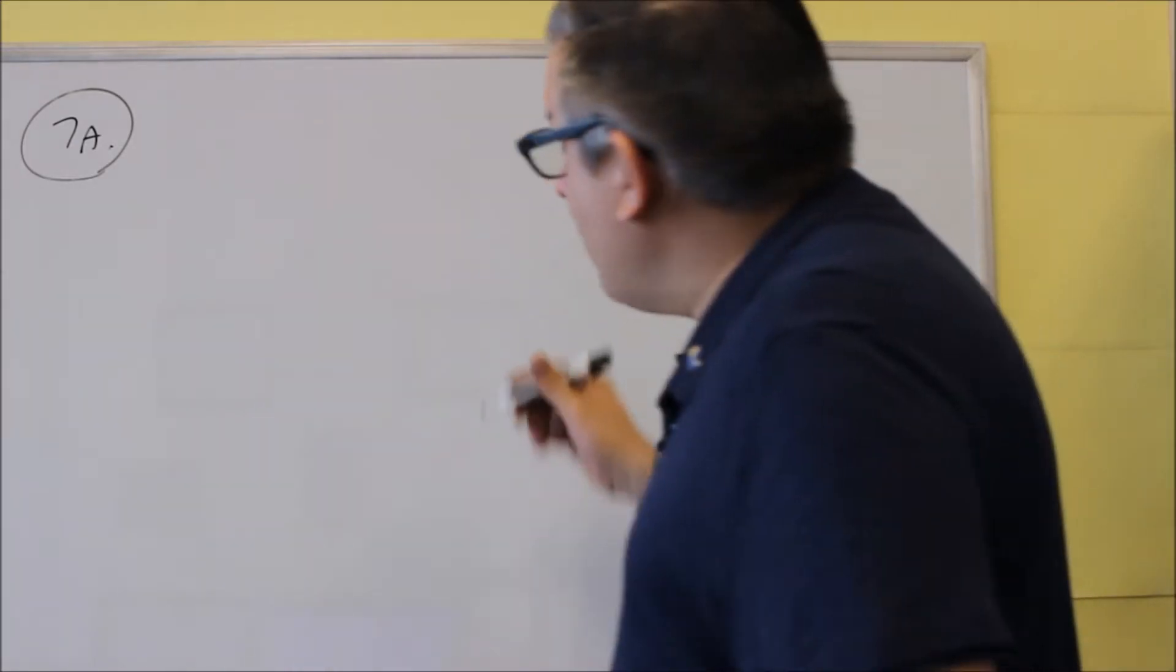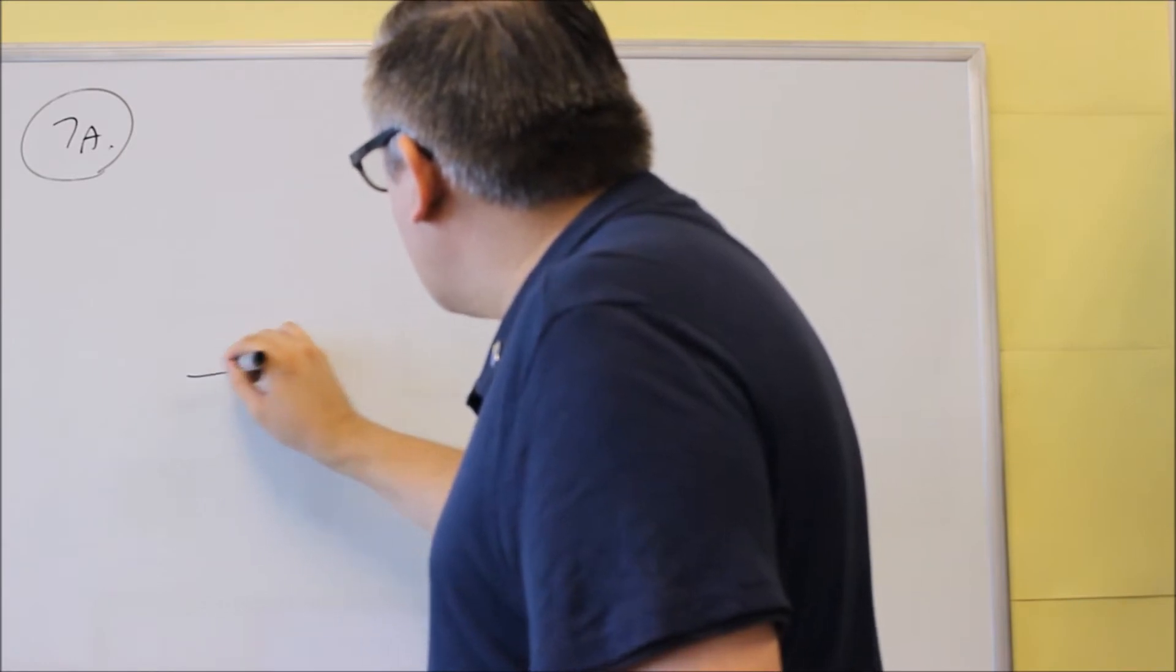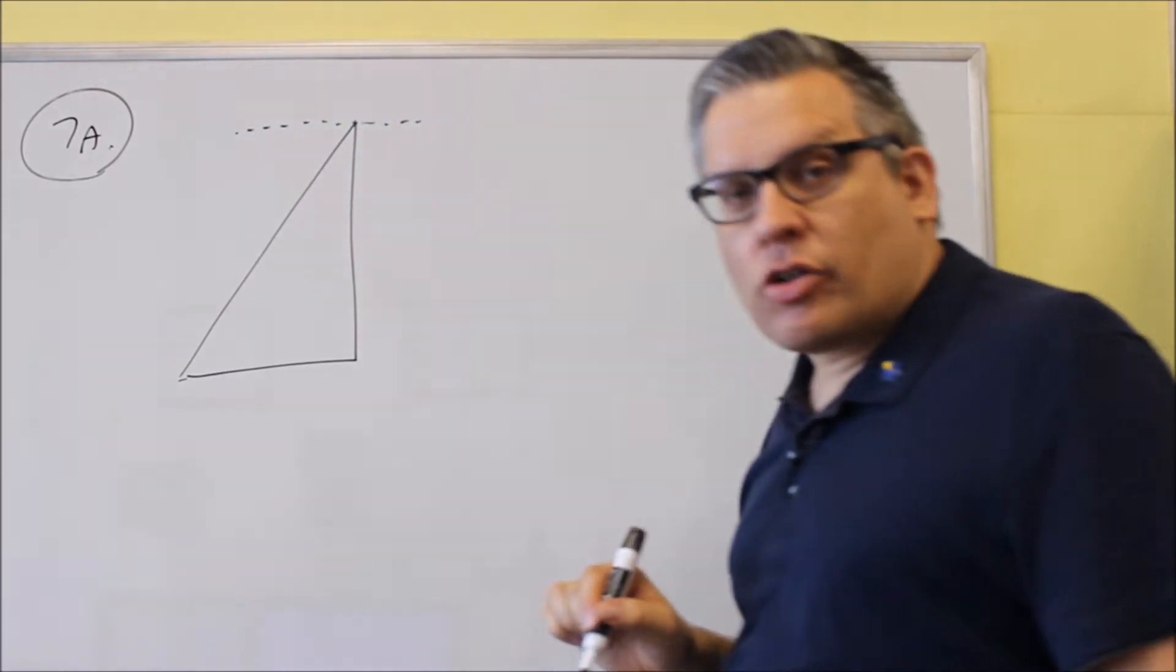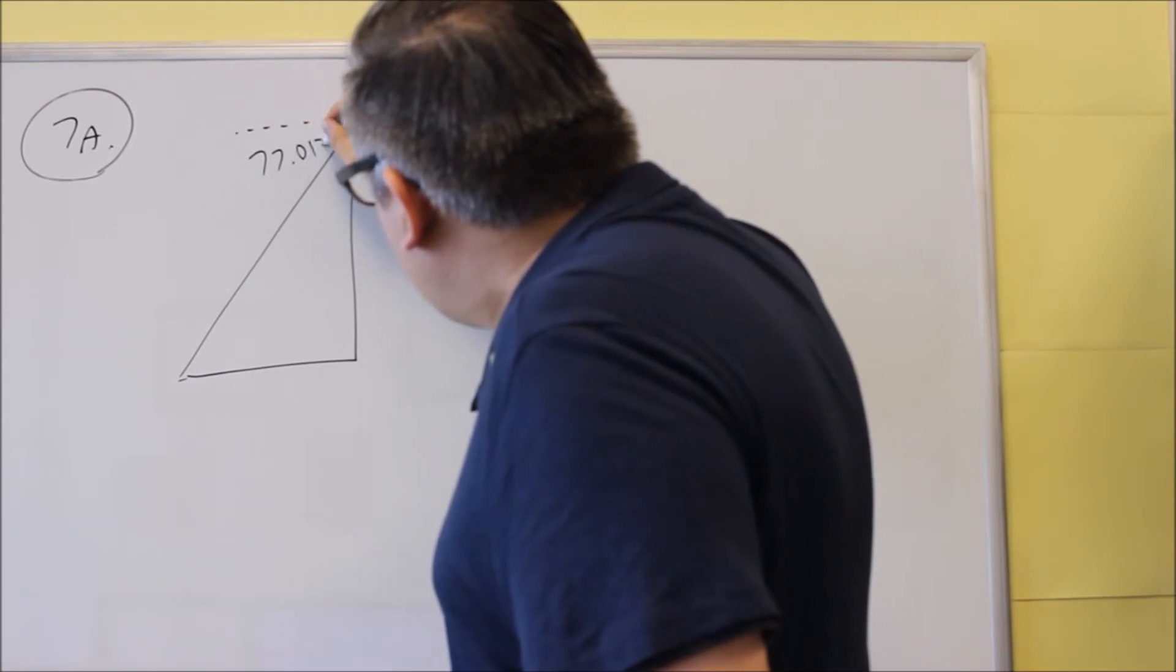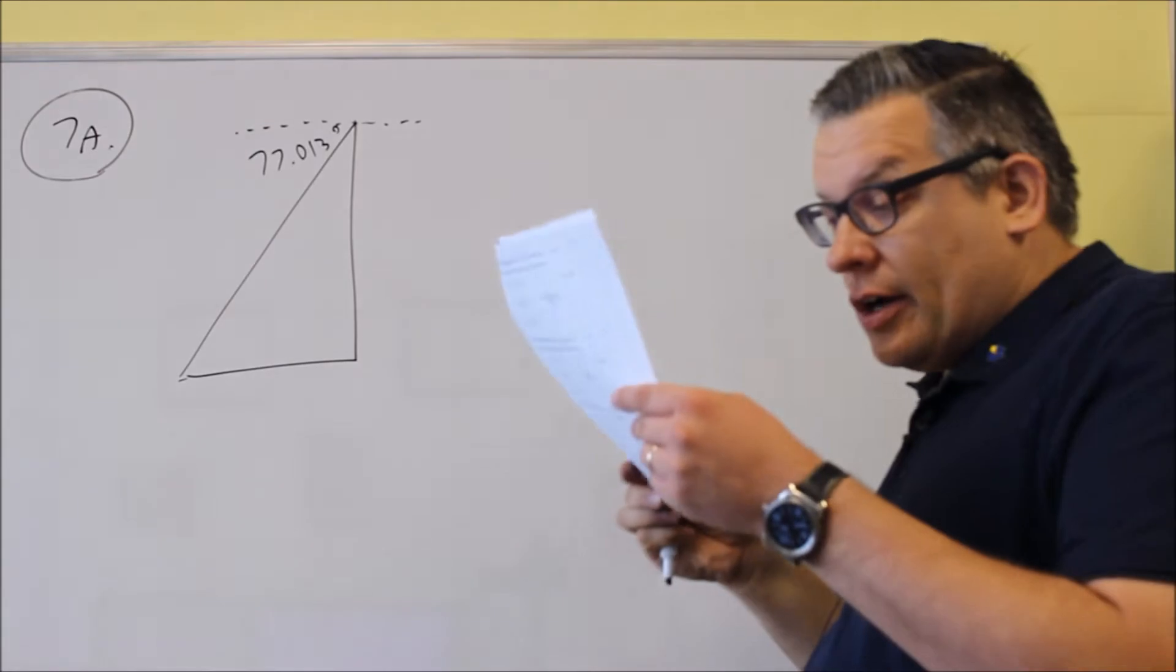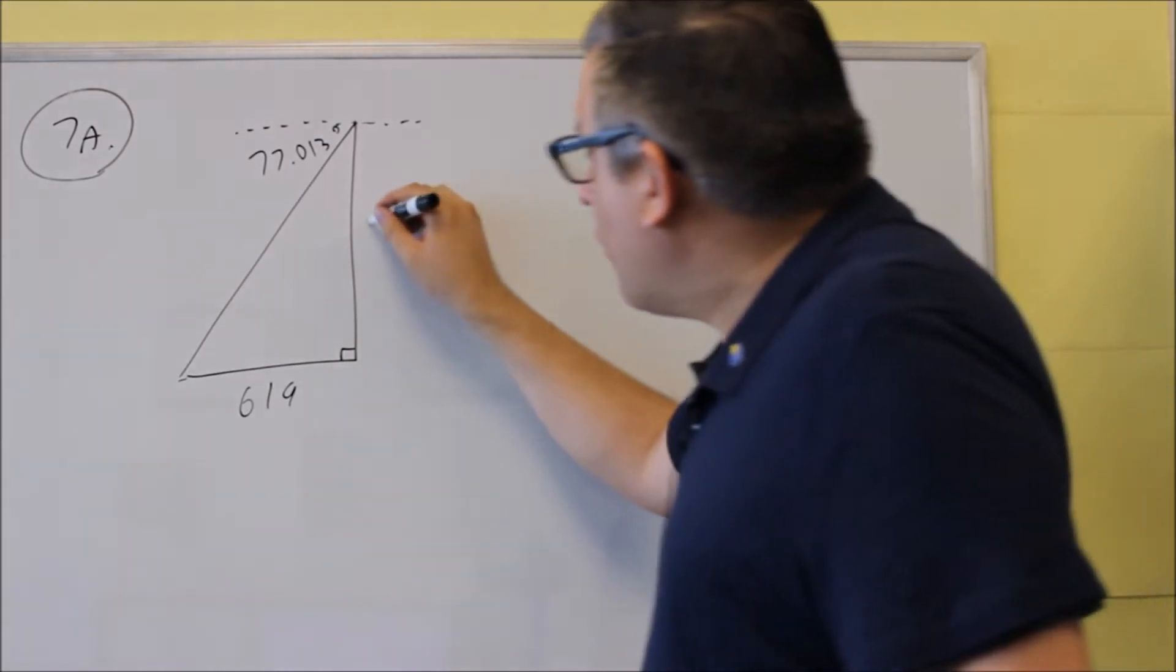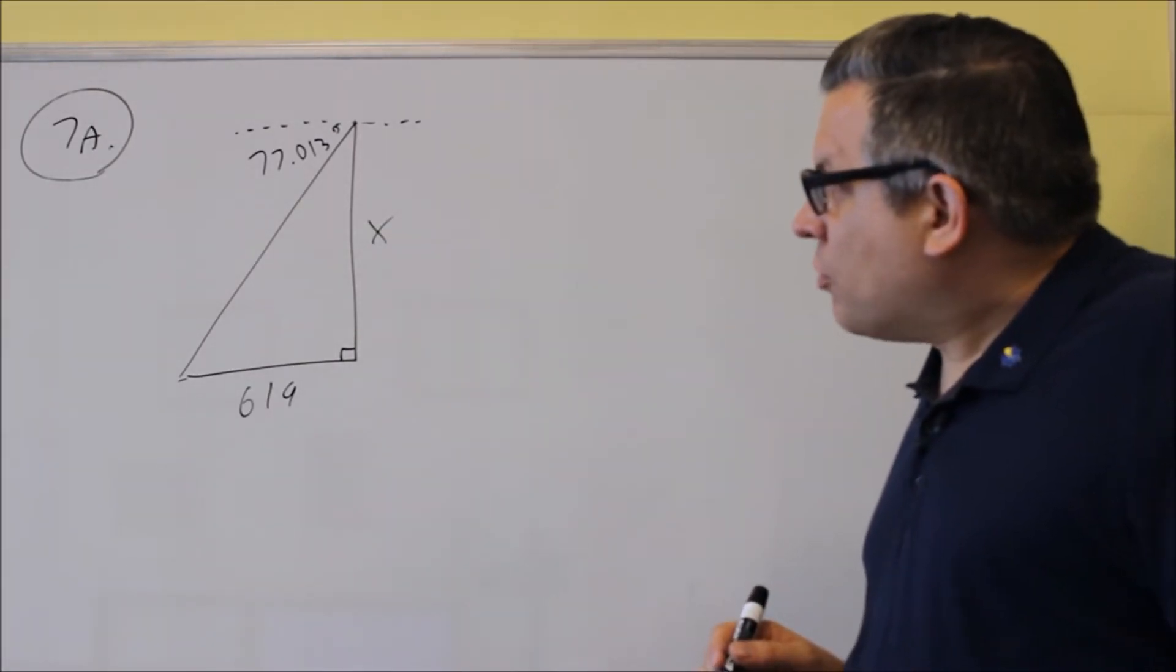So first of all, what we're going to do is draw a picture of what's happening. We're given that we have an angle of depression. Now, if you have an angle of depression, that means you're looking down at something. So a person's looking down here to a person, and this person is standing 619 feet away from the base of the building, and we want to find the height. So that's the information we're provided.